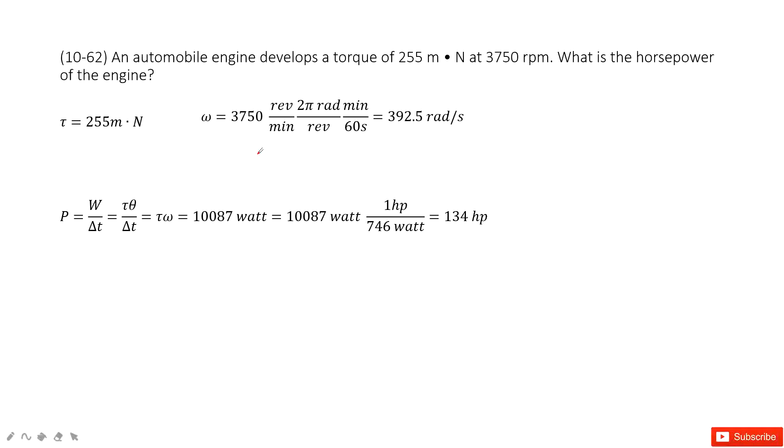In this chapter, we talk about rotational motion. As you can see, there we have an engine, right? One automobile engine. And when the torque is given and the angular velocity is given, we need to find the horsepower.